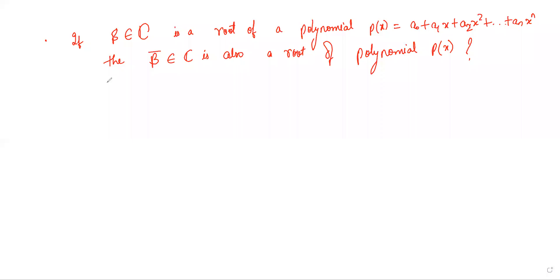We have to prove that if beta is the root of a polynomial p(x), then beta bar is also a root of the polynomial p(x). We know that p(beta) is equal to 0.